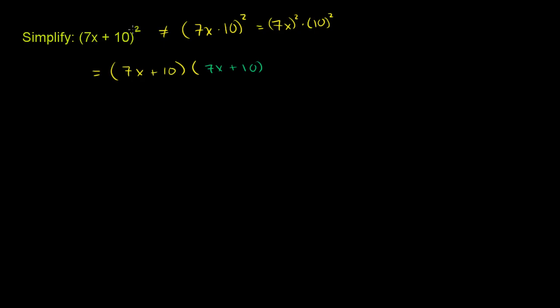This is (7x + 10)² which is just (7x + 10) times (7x + 10). That's probably the single biggest point of confusion when people first learn to take the square of an expression like this. Always remember it's (7x + 10) times (7x + 10). Now we can multiply it out.